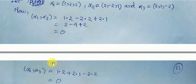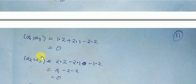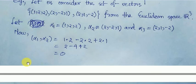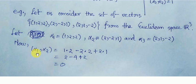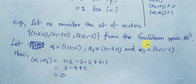So, alpha 1 comma alpha 2 = 0, alpha 1 comma alpha 3 = 0, and alpha 2 comma alpha 3 = 0. For every ordered pair of distinct component vectors, the inner product value is equal to 0. Therefore, this set of vectors is an orthogonal set of vectors from the Euclidean space R3.